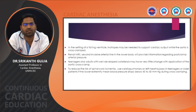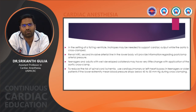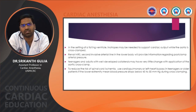Renal NIRS and a second invasive arterial line in the lower body will provide information regarding post-clamp distal pressure. Teenagers and adults with well-developed collaterals may have little change with application of the aortic cross clamp. To reduce the risk of spinal cord ischemia, use cardiopulmonary bypass or left heart bypass in teenagers and older patients if lower extremity mean BP drops below 45 to 50 mmHg during cross clamping.